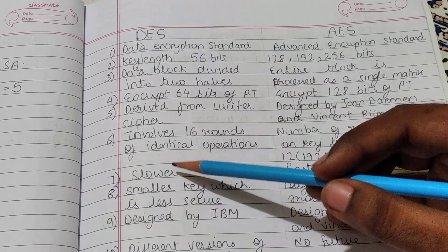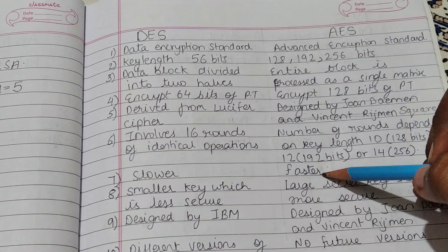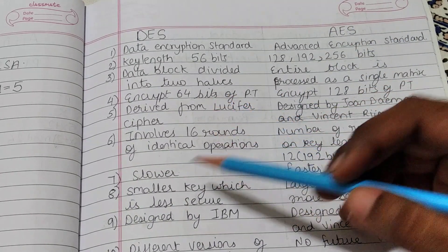DES is slower, but AES is comparatively faster. DES has smaller key which is less secure.